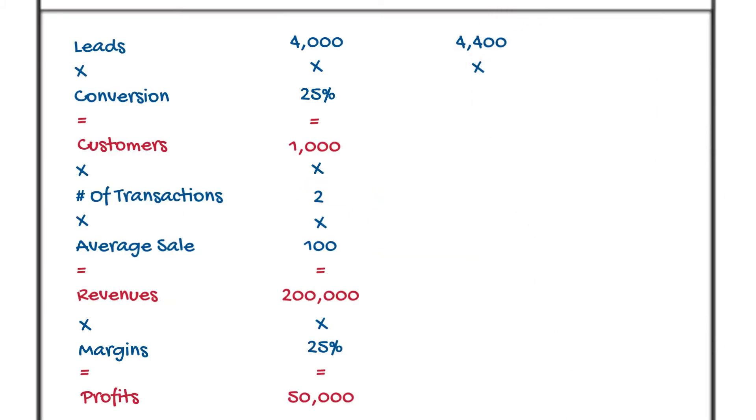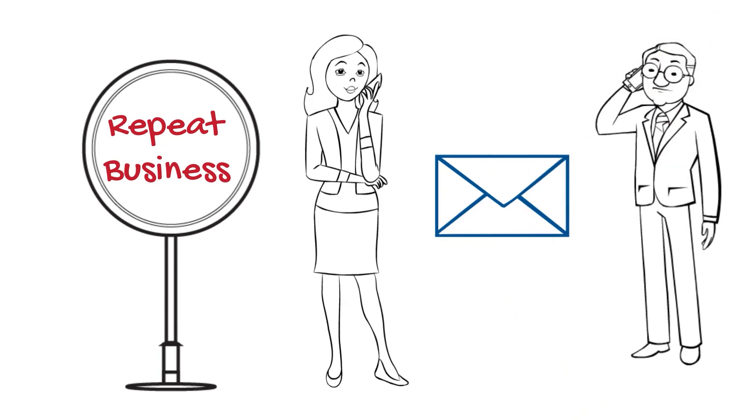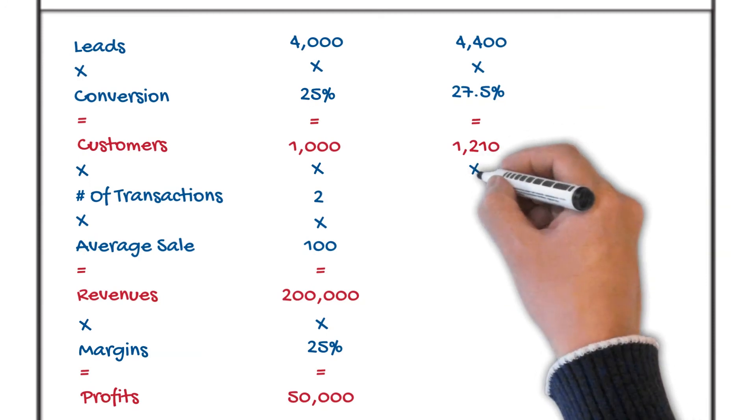Conversion rate. More than 70 strategies to increase your conversion rate. Add that to the increase in your lead rate, and all of a sudden now, at 27.5%, 10% better, you're at 1,210 customers. Then, we've got to work on repeat business strategies. Again, more than 60 of those. In this case, we're only going 10% up, 2 to 2.2.